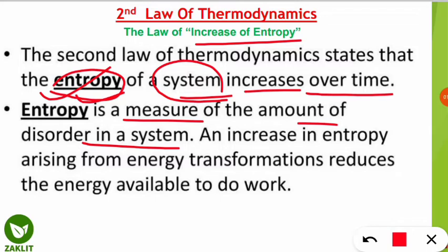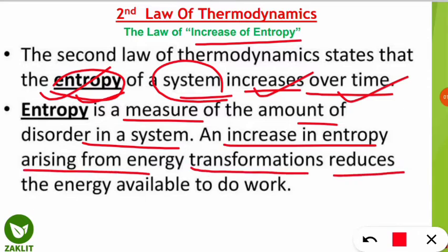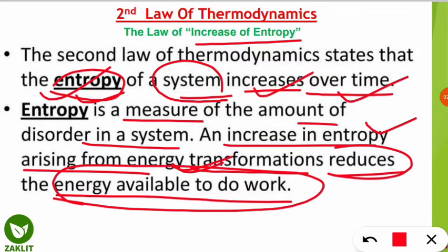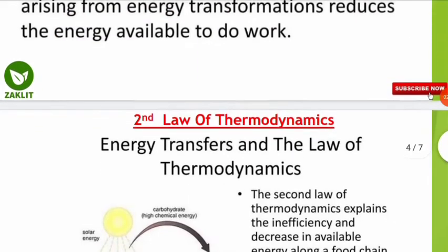The second law states that the disorderness of any system increases over time. An increase in entropy arising from energy transformation reduces the energy available to do work. So as entropy increases — as the degree of randomness increases — that results in a reduction in the energy available to do work.